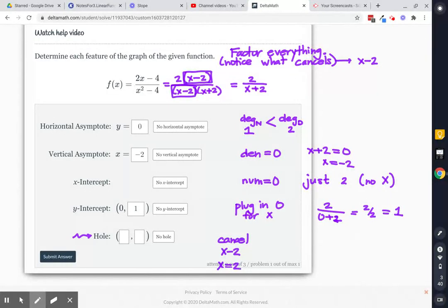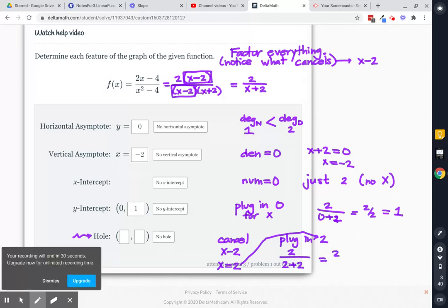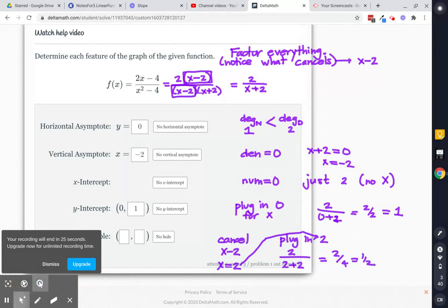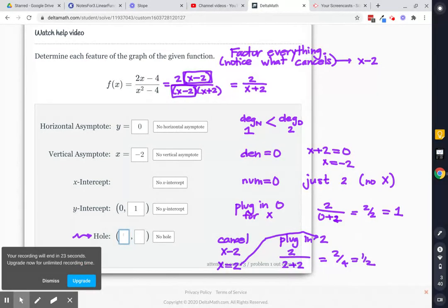Then, we have to figure out what the y-coordinate is. And so what we do is we plug in 2. So here we go. 2 over, the 2 we plug in is going to go in the x spot. 2 plus 2 is 2 over 4, which is 1 half. So I'm going to pop this information in for my hole, which is a hole of 2 and 0.5.